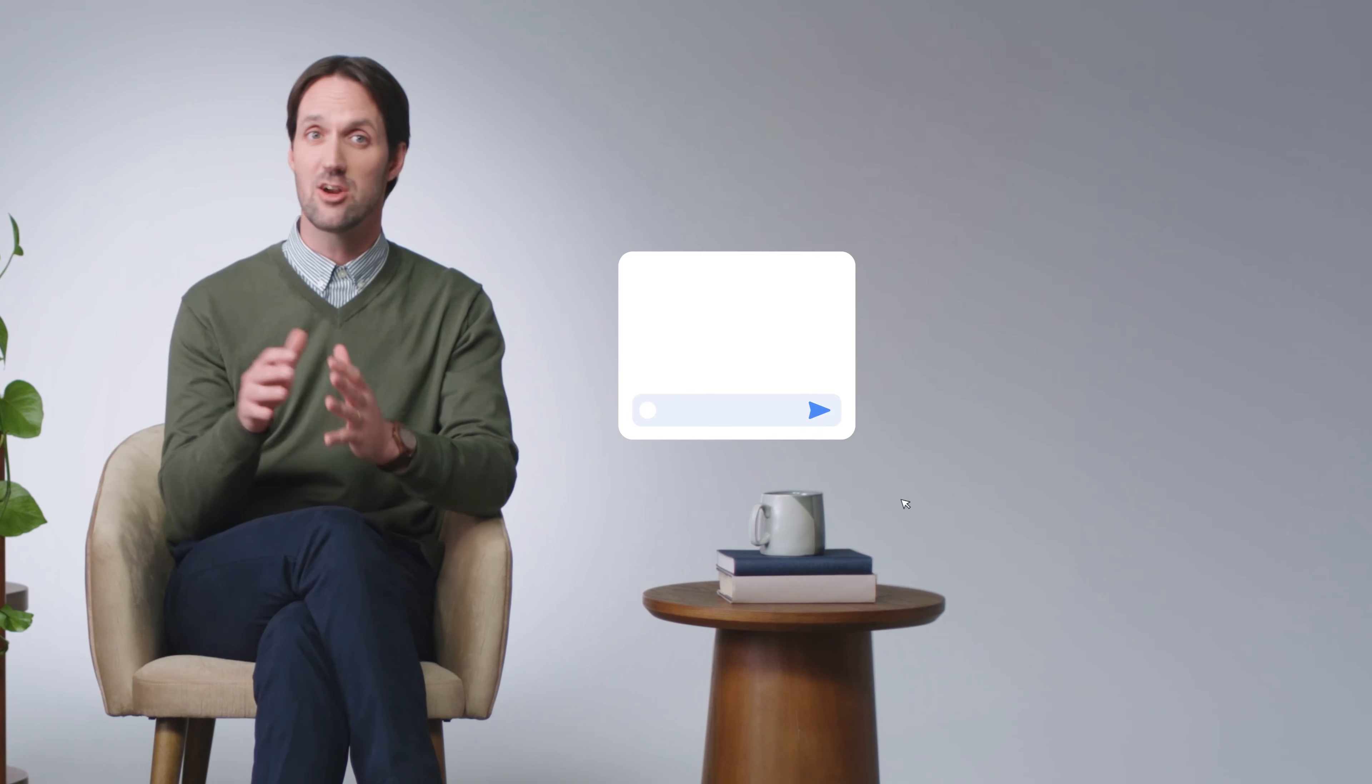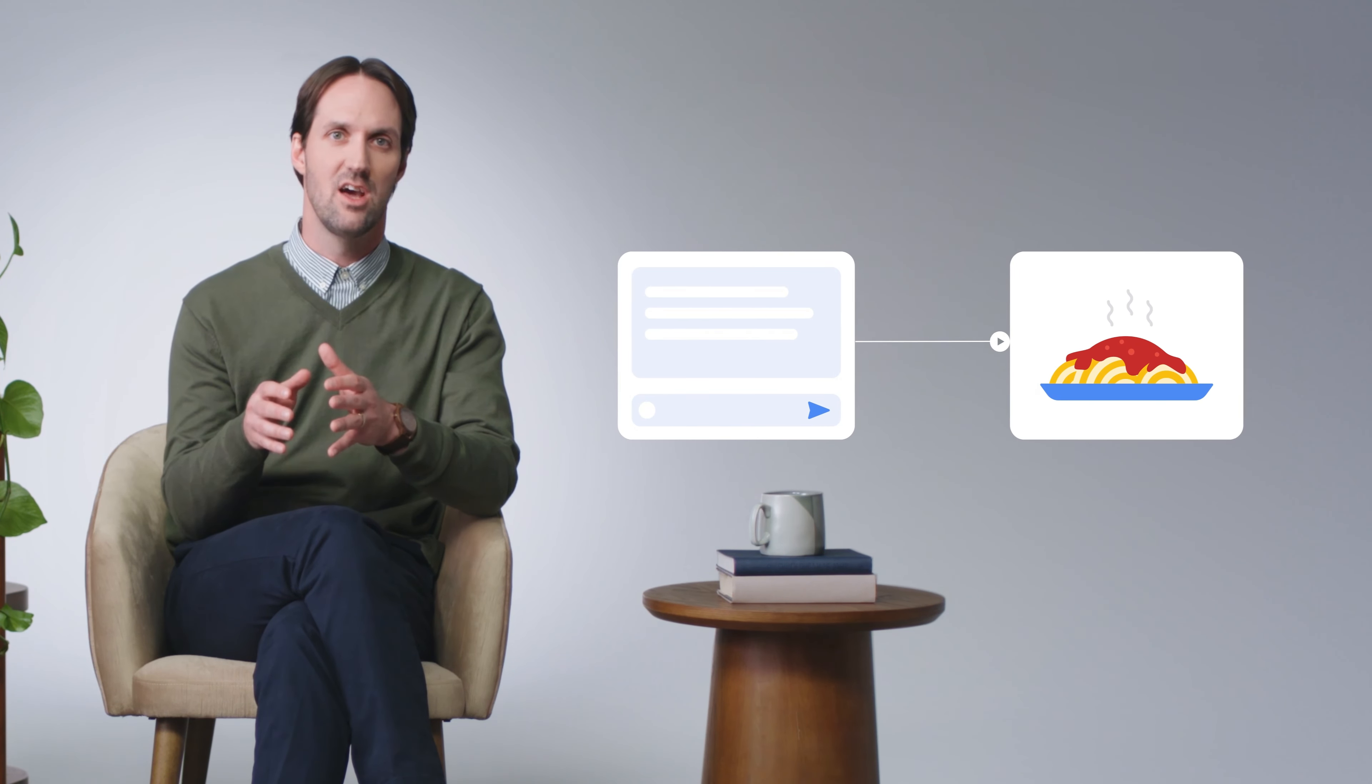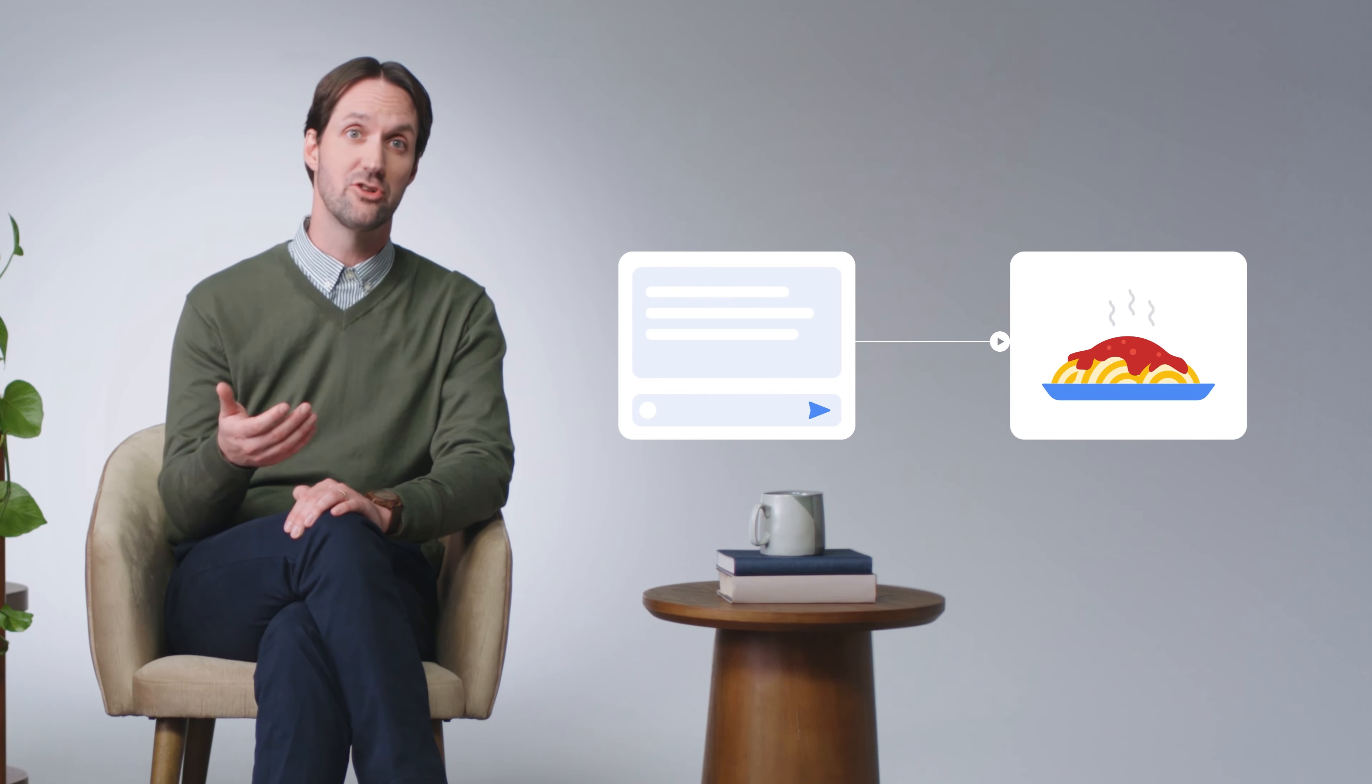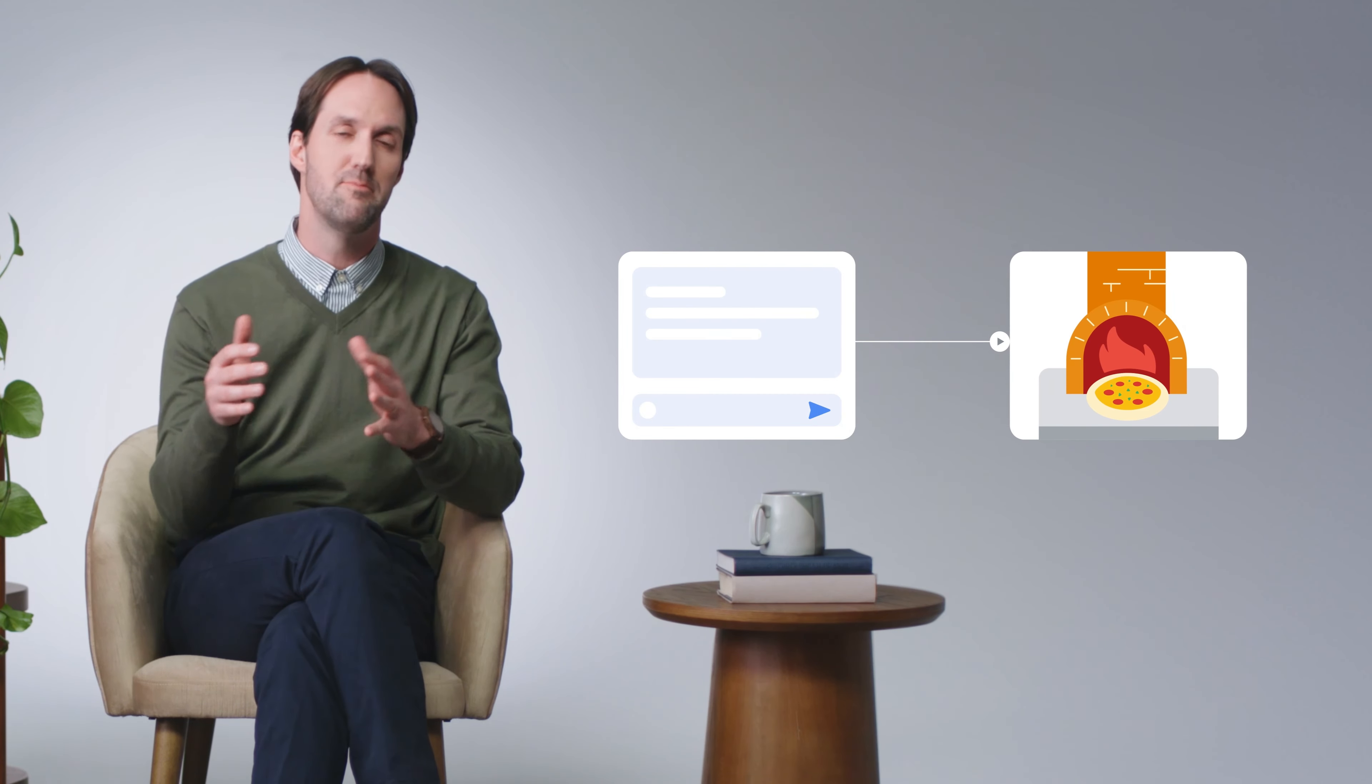In this case, say your restaurant serves Italian food and the AI tool generates an ad with a picture of a spaghetti dish. After thinking about the output, you decide it'd be more appealing to feature your restaurant's freshly baked pizza coming out of your wood-fired oven. You iterate and refine your prompt until you receive the best results.